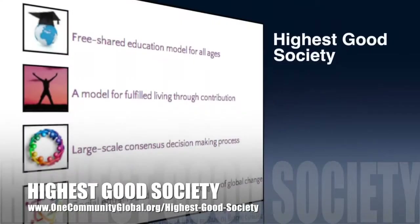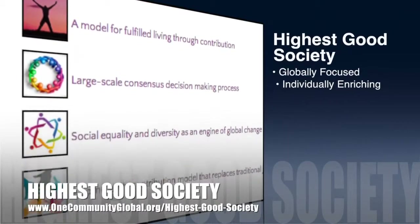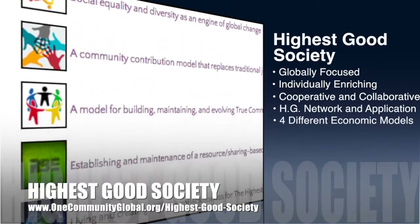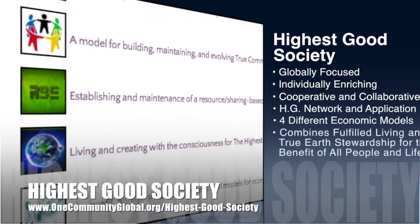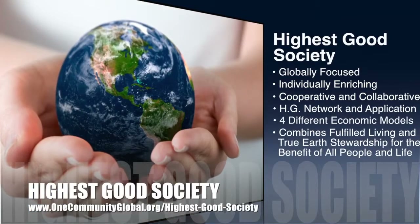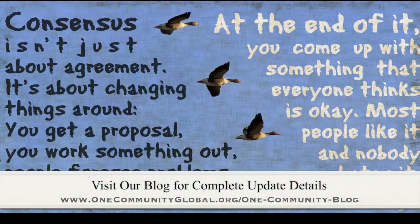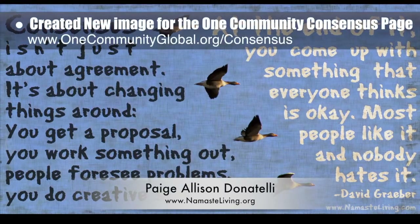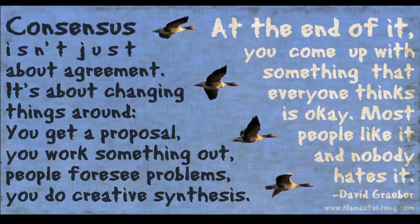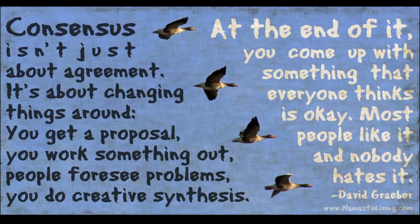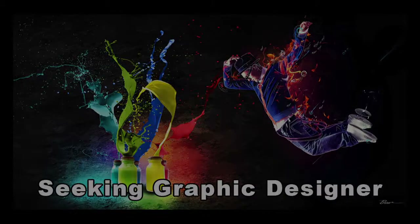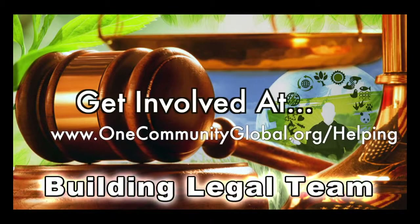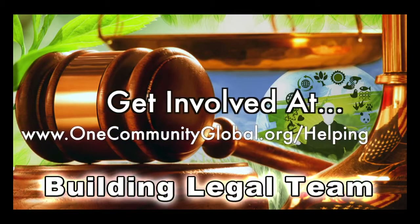OneCommunity's approach to Highest Good Society is globally focused, individually enriching, cooperative and collaborative, includes a highest good network and application, four different economic models, and combines fulfilled living and true Earth stewardship for the benefit of all people and all life on this planet. This week, Paige Allison Donatelli created a new image for the OneCommunity Consensus page, used to promote this page through social media. In this area, we are seeking graphic designers, web designers, technology specialists, videographers, and are building a Highest Good legal team.